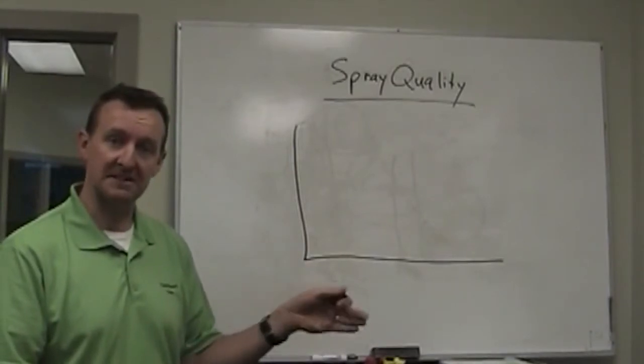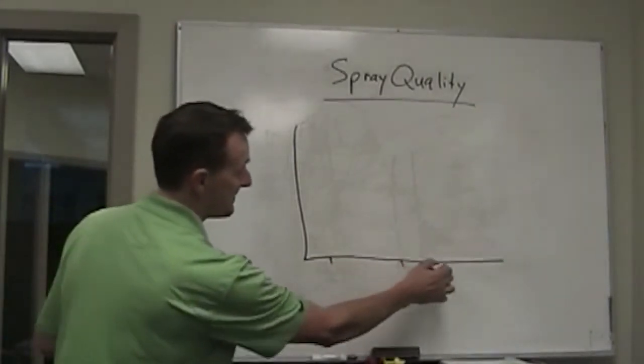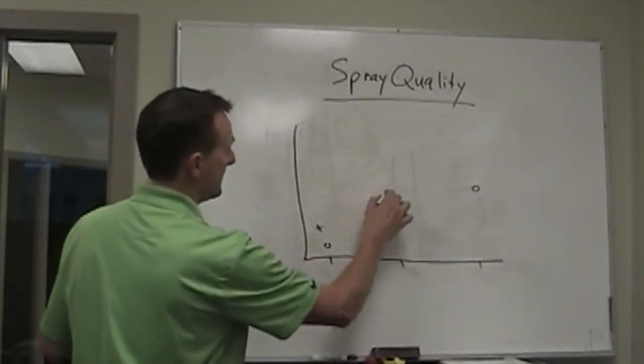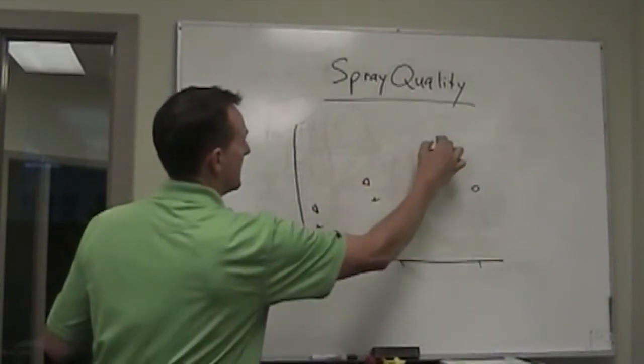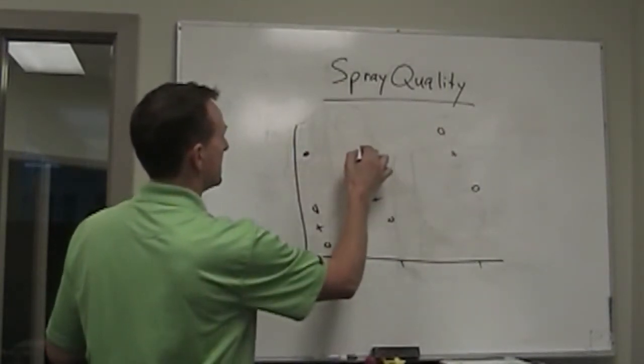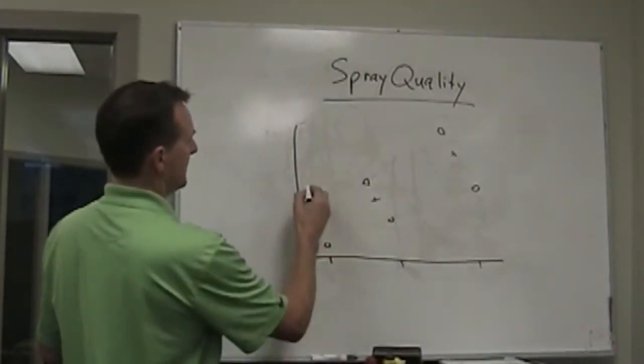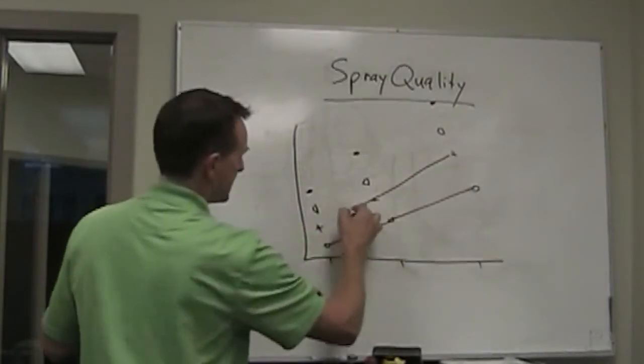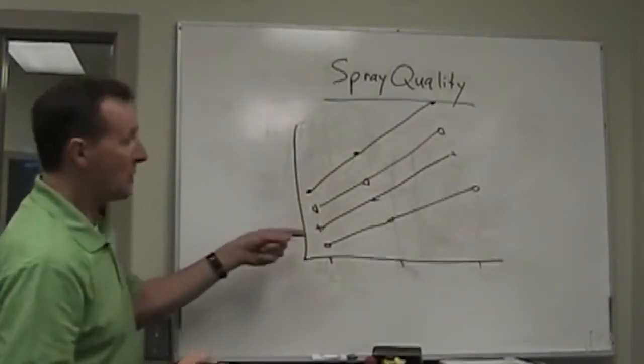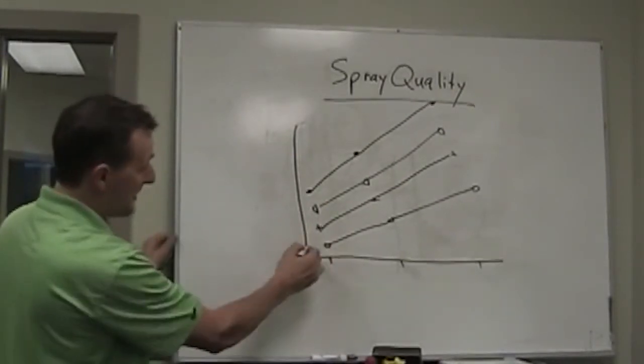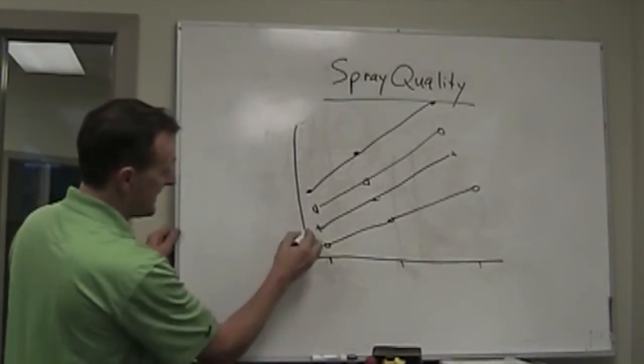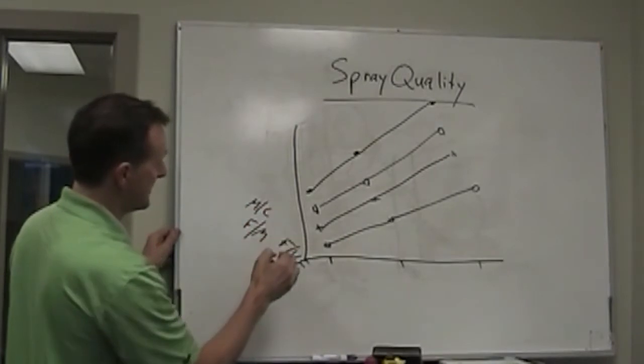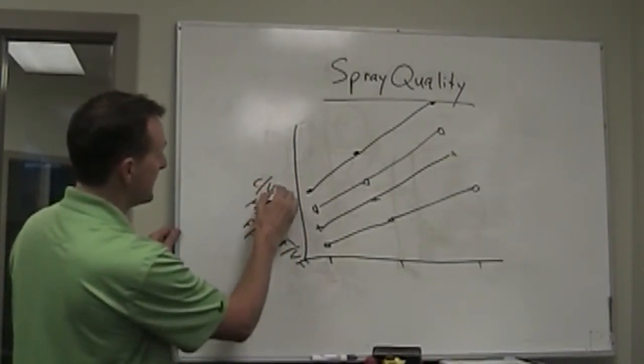And what we'll do is when we have to measure spray quality, we'll spray them in a lab and we'll measure these dv0.1, dv0.5 and dv0.9 parameters I just talked about. And then we end up with little data points for these reference nozzles. And we just sort of draw these lines together. So these lines now represent border categories. So for example, this first one might be the fine, very fine line. And this one here might be the fine, medium line. This one might be the medium coarse. And this one could be the coarse, very coarse, and so on.